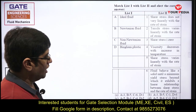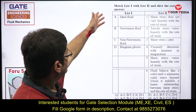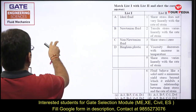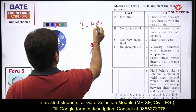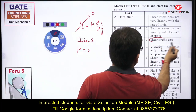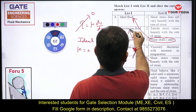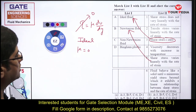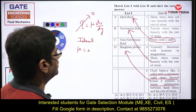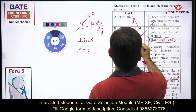For ideal fluid, μ = 0 (inviscid), so shear stress τ = μ(du/dy) = 0. For Newtonian fluid, shear stress varies linearly with rate of shear strain. For Bingham plastic, the fluid behaves like a solid up to a minimum yield stress threshold, then follows a linear (Newtonian-like) relation. For non-Newtonian fluids, shear stress does not vary linearly with strain rate.